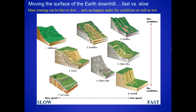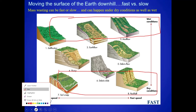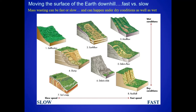There are a lot of different mass wasting processes. On your lecture assignments, I ask about different types. Some of them are very fast, some are very slow. Some happen under wet conditions and some under dry conditions. These processes are organized on the basis of wet versus dry and slow versus fast. Some slow ones would include soil creep and slump.